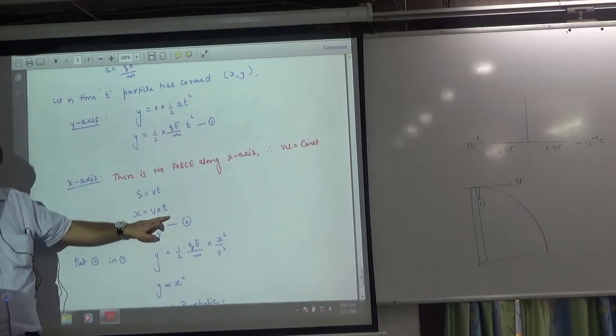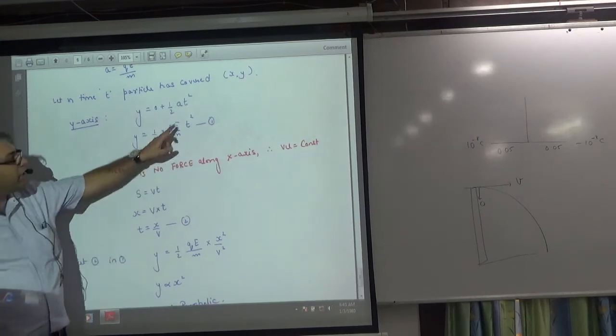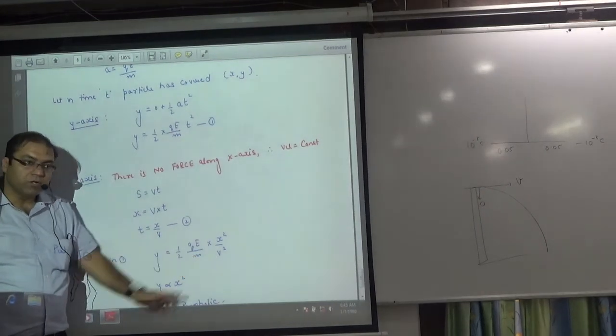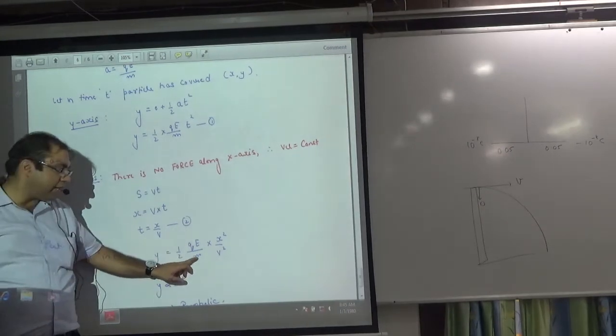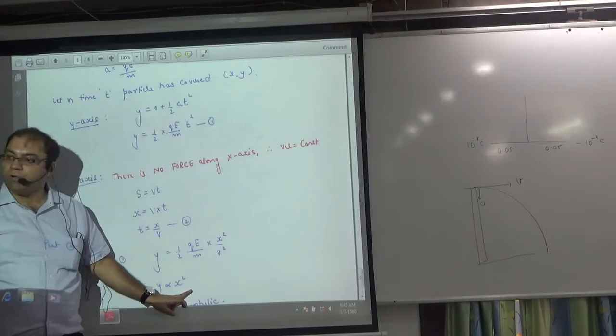So here is time value. Time code, put here, x square, v square. This equation is constant. All masses, v, all constant. Y proportional to x square. In maths, if y proportional to x square, what is the path followed? Parabola.